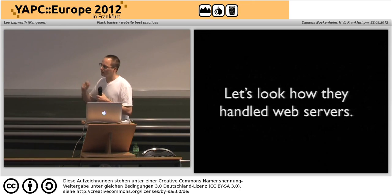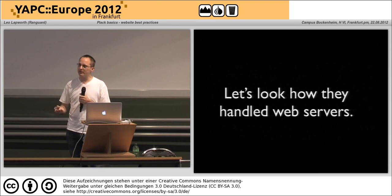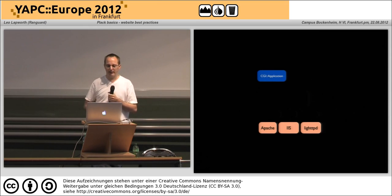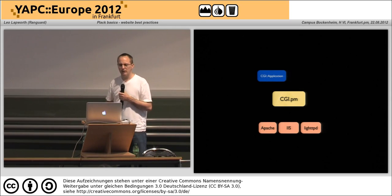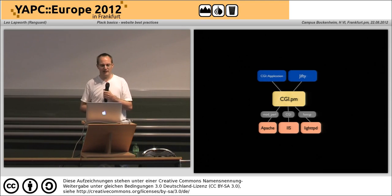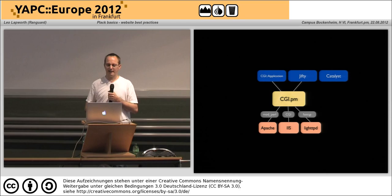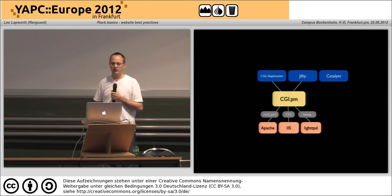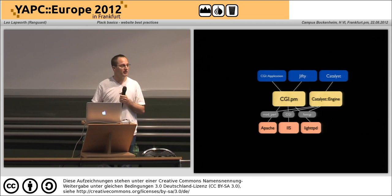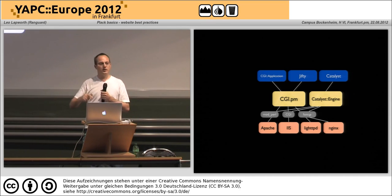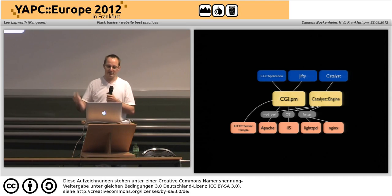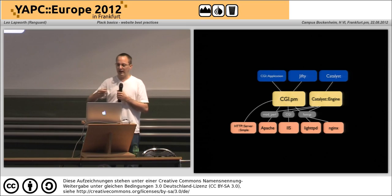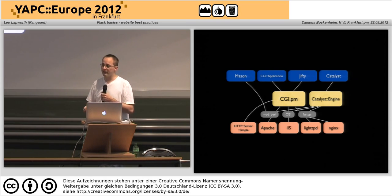How did they actually work when they wanted to handle talking to all these different web servers? We had CGI.pm, so something like CGI::Application would use CGI.pm. Jifty also used CGI.pm. Catalyst realized CGI.pm wasn't really the way forward, so they wrote their own — Catalyst::Engine — and then for each web server they had a plugin module. When a new server appeared, both CGI.pm and Catalyst::Engine had to handle it.